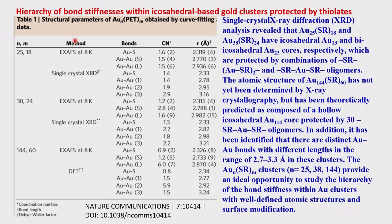The data for Au25, Au38, and Au144 is analyzed and fitted, showing coordination number and distance. For the Au144 cluster the fit uses DFT data and gives Au-Au, Au-S distances with shorter and longer Au-Au values identified. This cluster data on bond stiffness and surface modification is helpful for future applications of these gold clusters, which are used in various fields. The EXAFS data and crystal structure data show very good agreement for the known clusters, validating the approach.